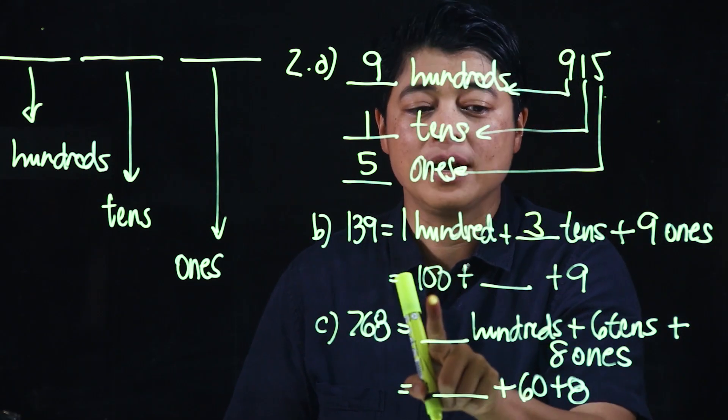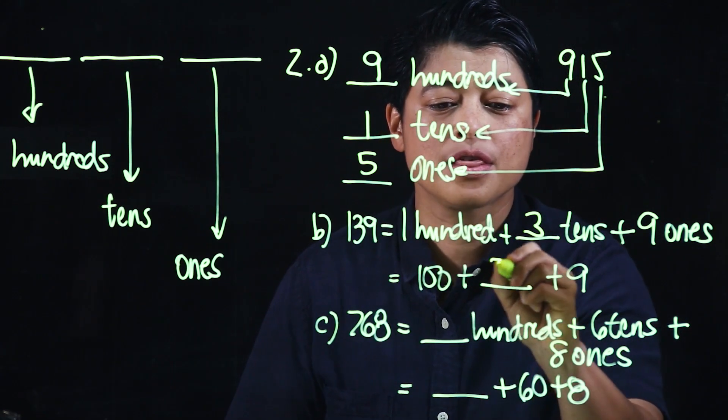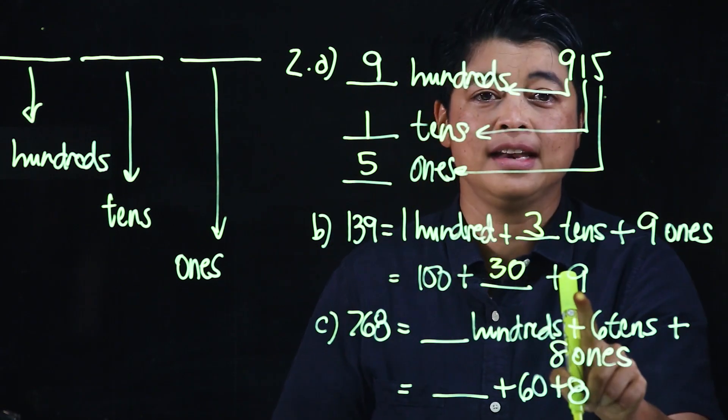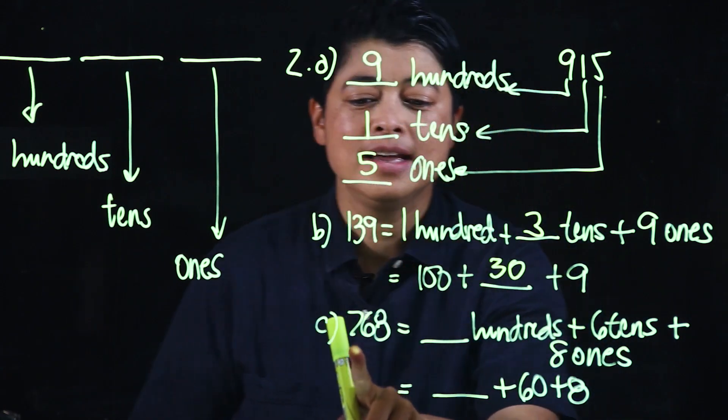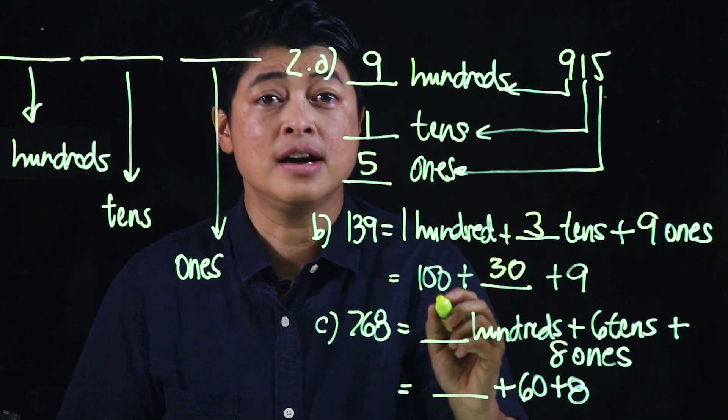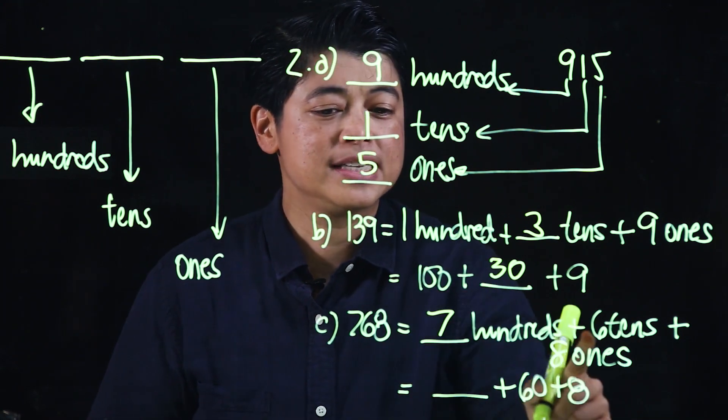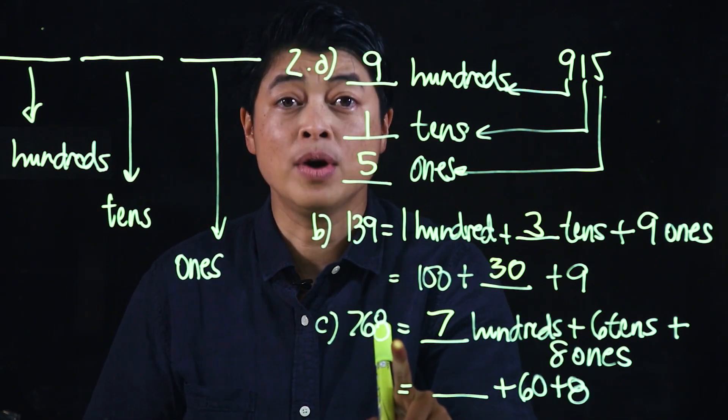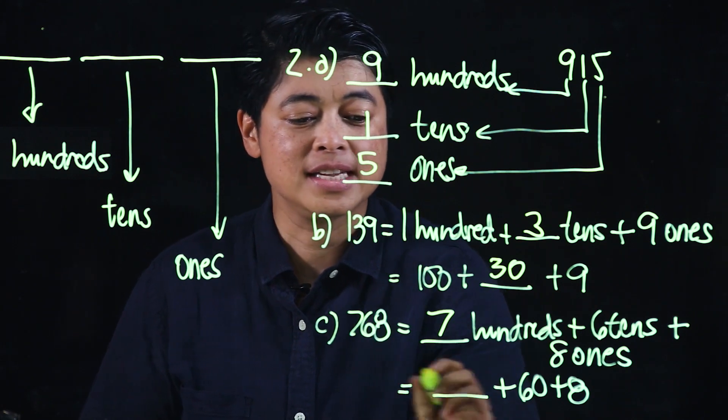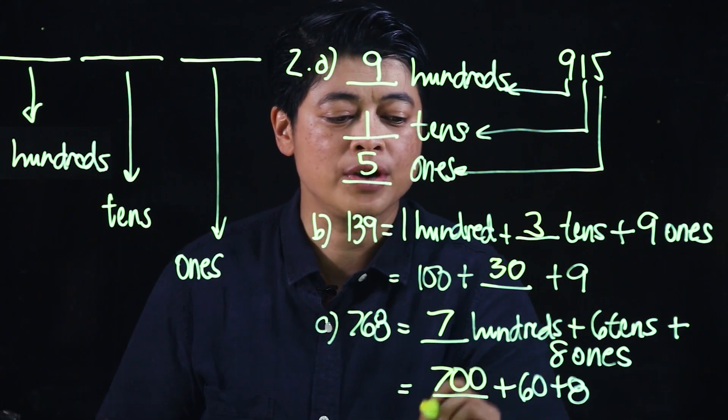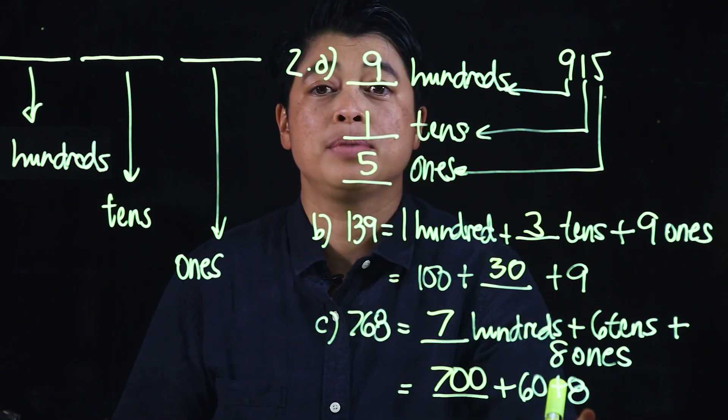Which is equal to 100 plus 30 plus 9. And finally, this is 7 hundreds, 6 tens, and 8 ones. Therefore, this is equal to 700 plus 60 plus 8.